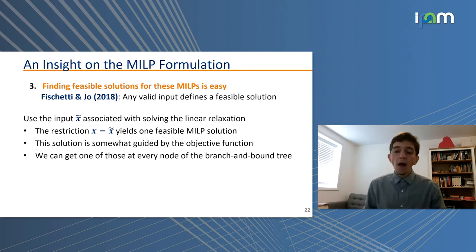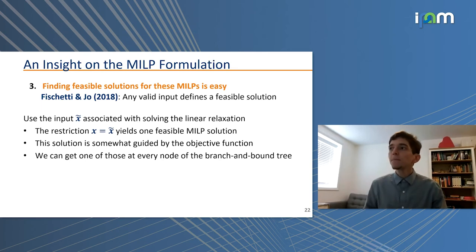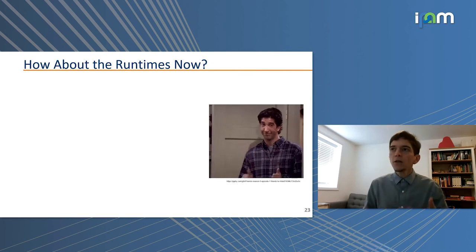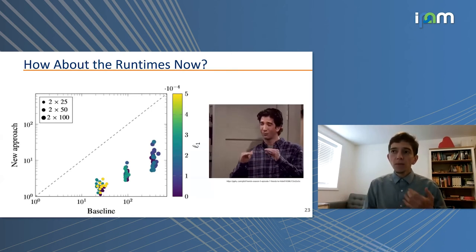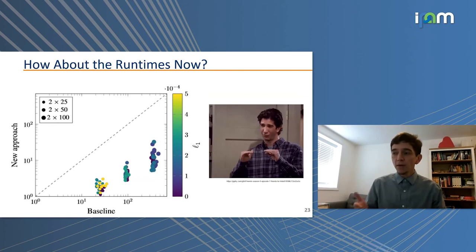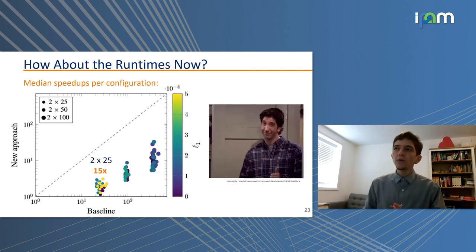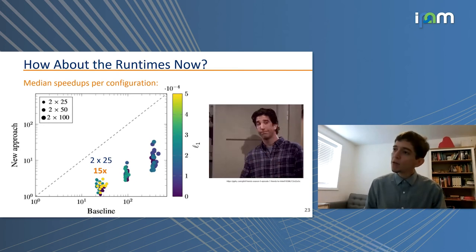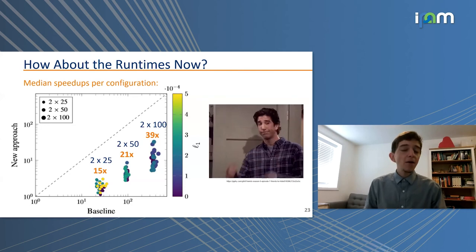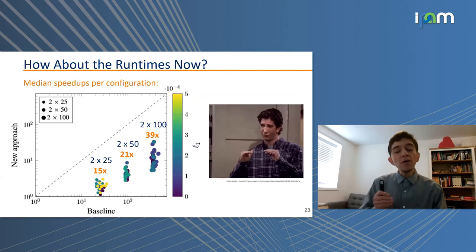In practice, we observed that when very few neurons had unobserved states remaining, this approach sped things up considerably. Looking at the runtime scatter chart — new approach on the y-axis, prior CPAIOR work on the x-axis — for two hidden layers of 25 neurons the median speedup was 15×, and for two hidden layers of 100 neurons the speedup was 39×. The colors indicate the amount of L1 regularization used during training — we'll discuss that shortly.